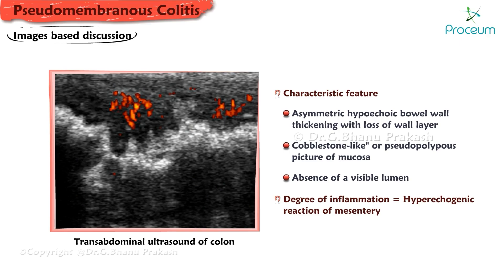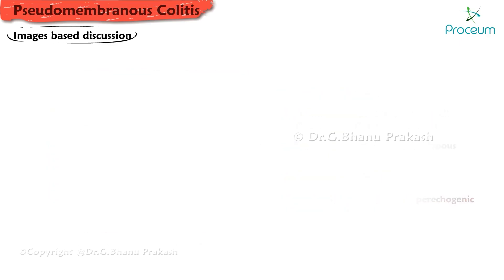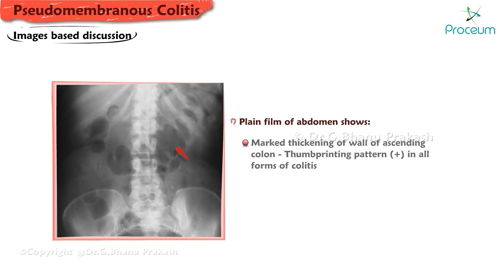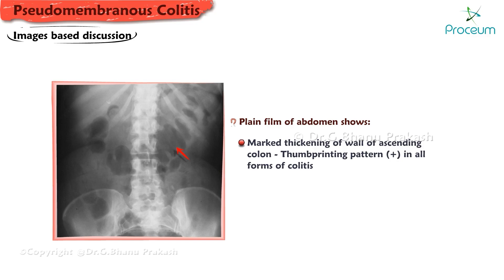Plain film of the abdomen demonstrates marked thickening of the wall of the ascending colon producing a thumbprinting pattern. This appearance is seen in all forms of colitis. That's all for the video.